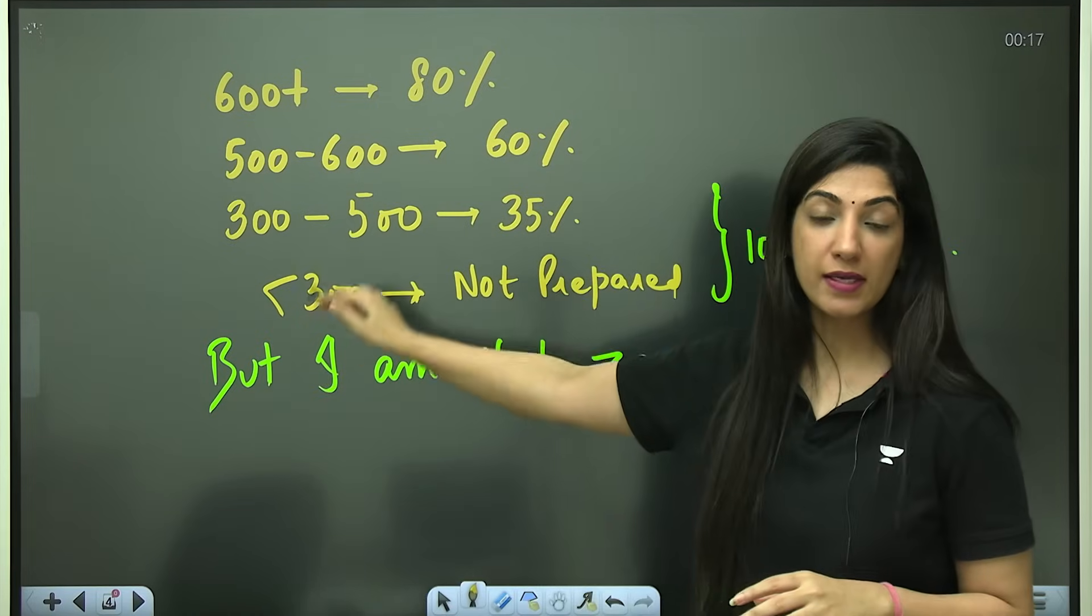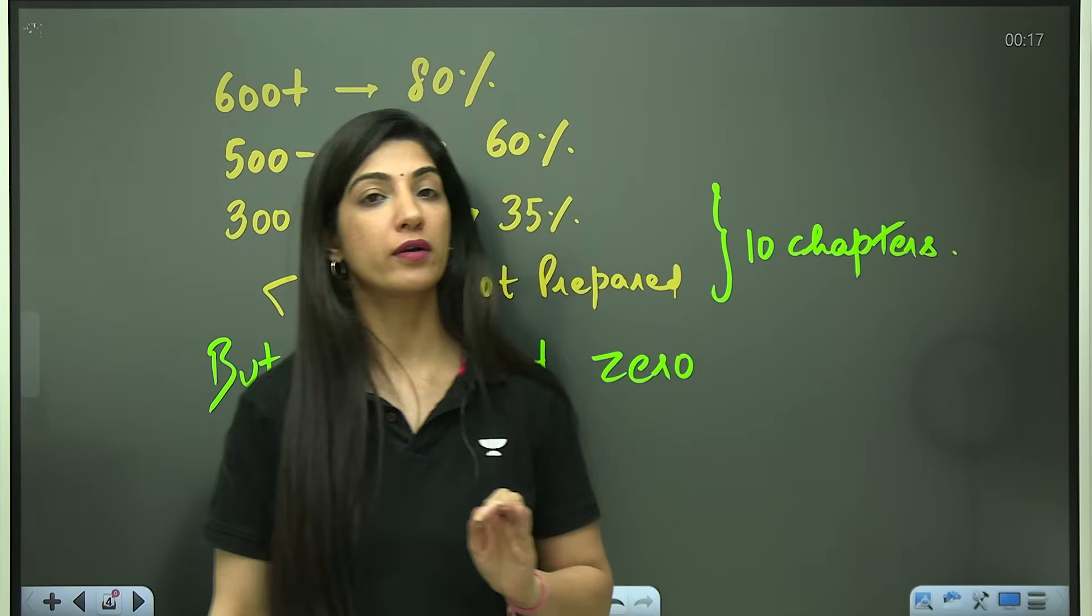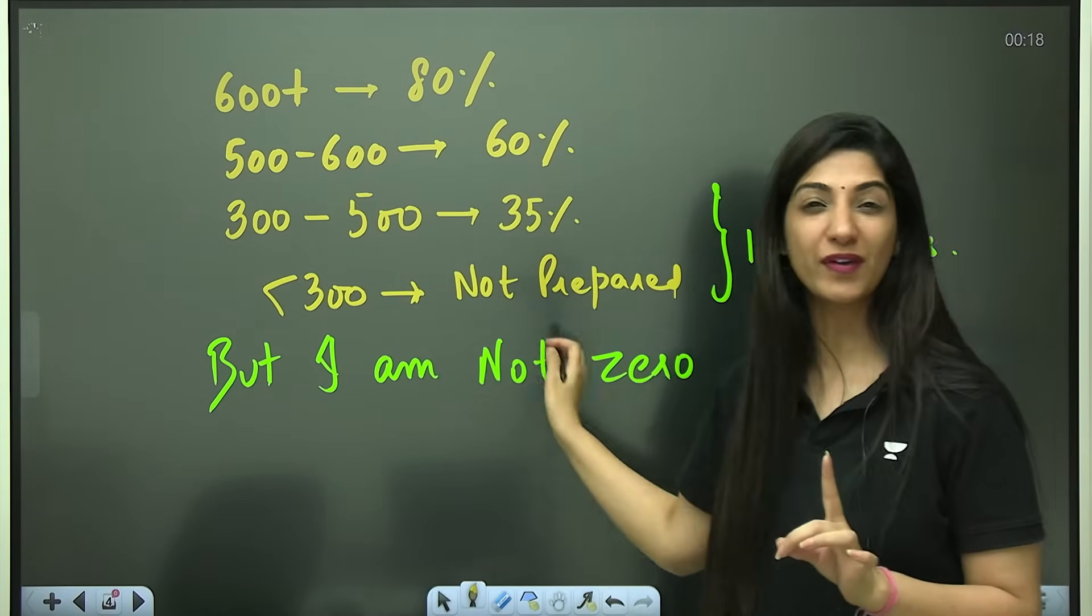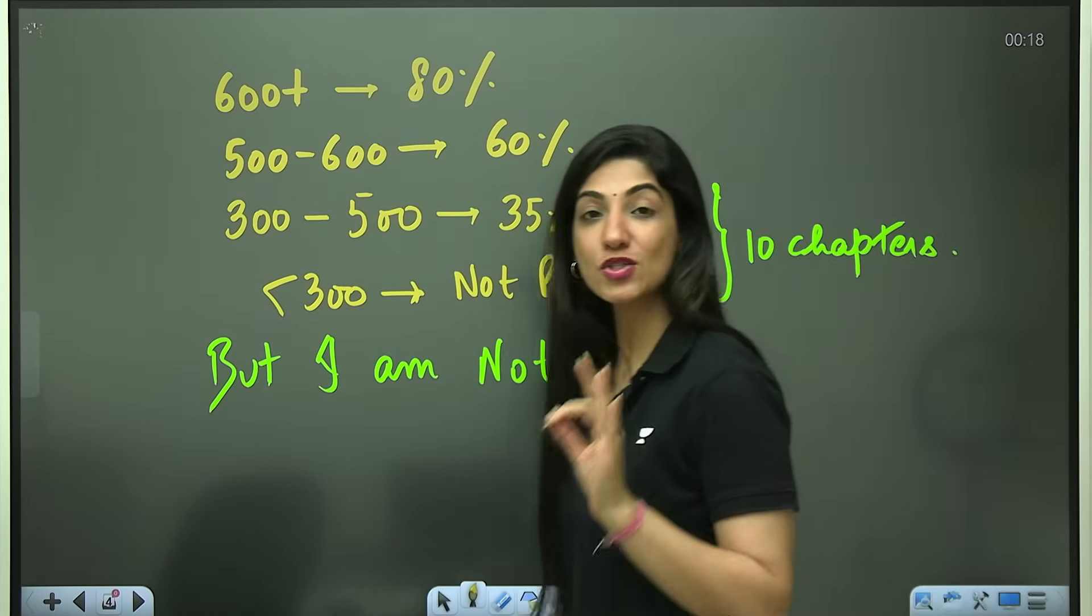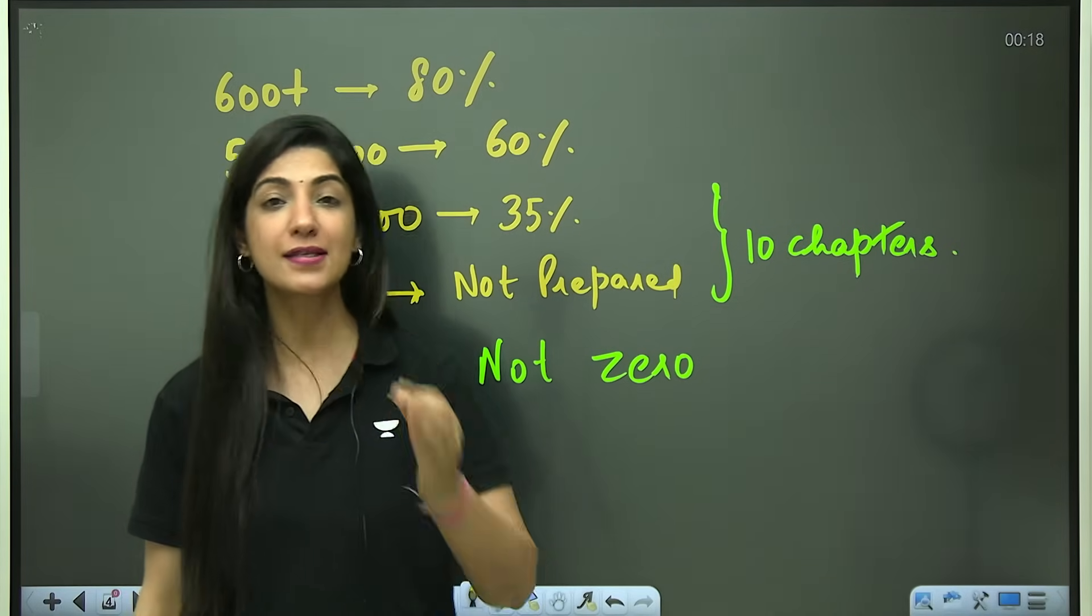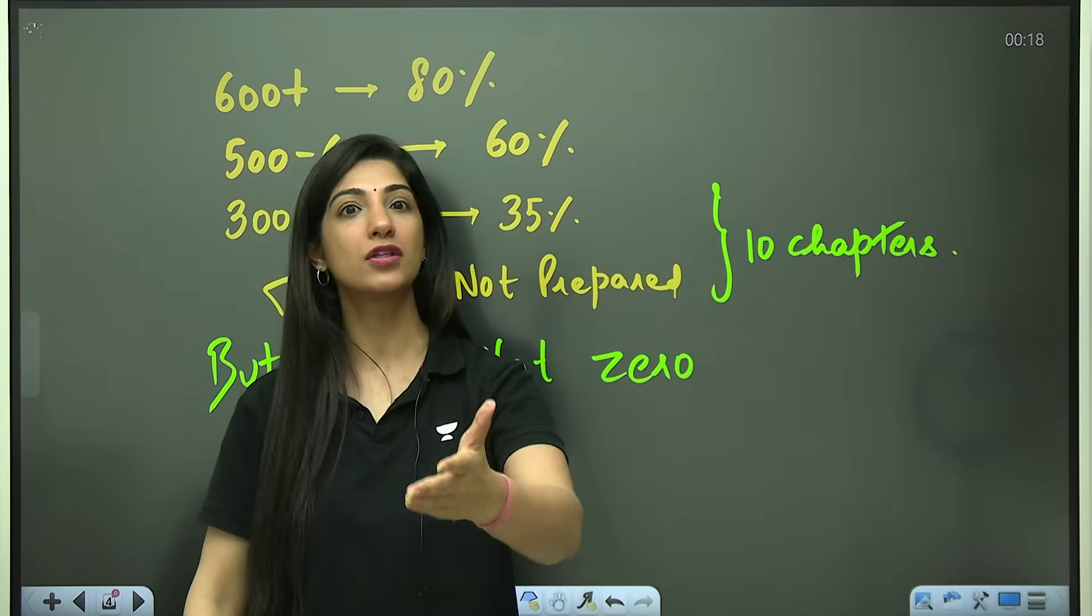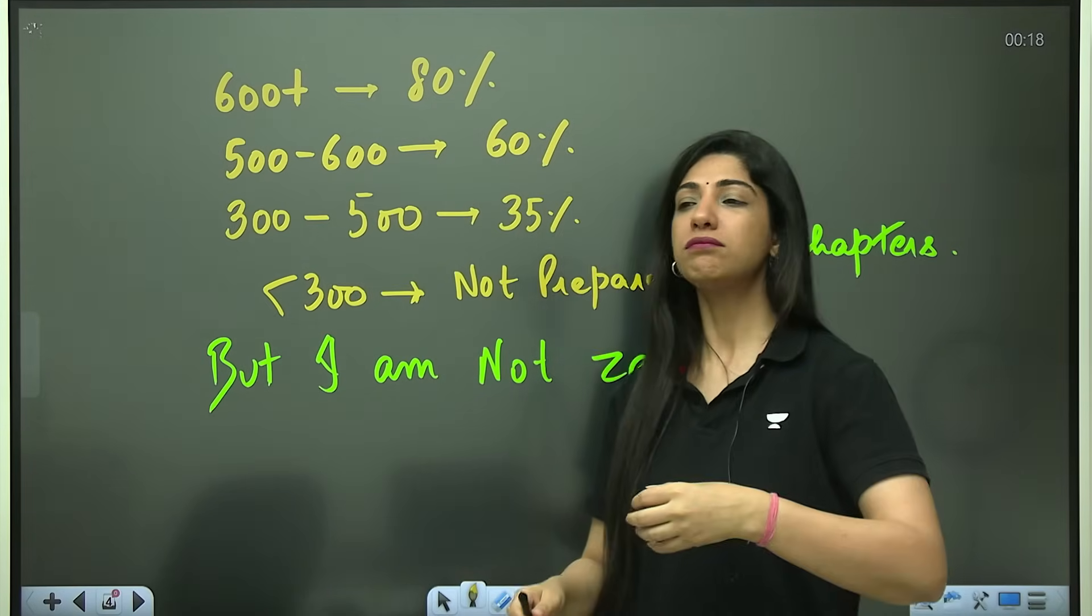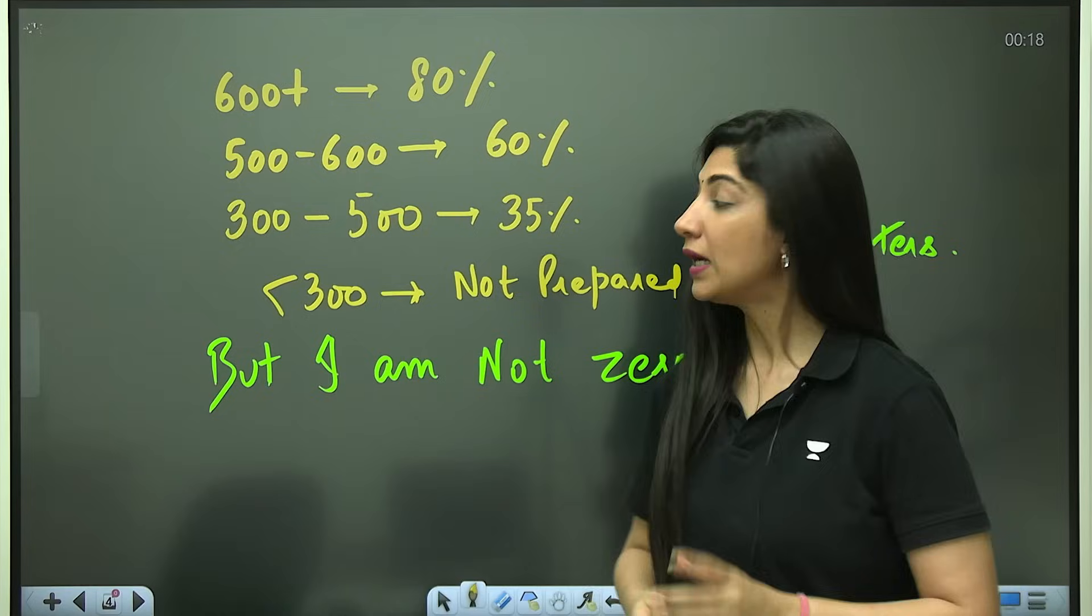But rest of the categories have the percentage of how close you are to your medical college. Now, the good part of the story is even if you are in this category, kindly know that you are not at zero. Even if you are in the last two categories, you know at least 10 chapters of the 79 chapters. Kindly give yourself some credit for units and dimensions or atomic structure or whatever chapters you like or find easy in each subject.